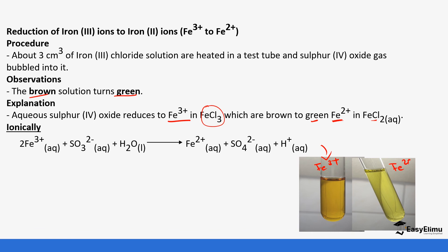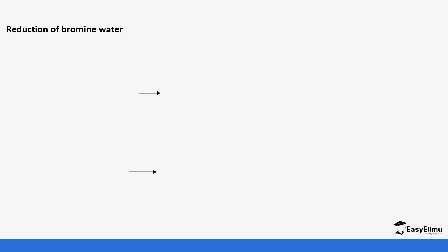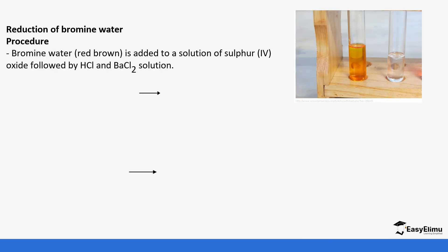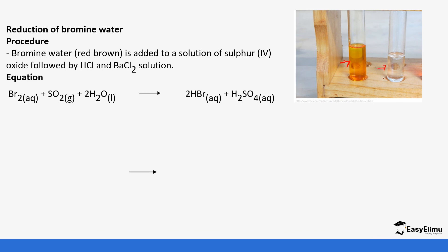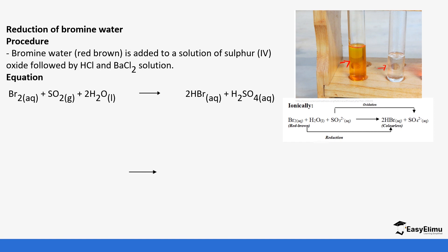Sulfur dioxide also causes the reduction of bromine water. Bromine water is yellow; when you bubble sulfur dioxide through it, it turns to a colorless solution. The color can sometimes appear red-brown depending on the concentration of the bromine solution. The bromine is reduced to hydrogen bromide — changing from red-brown to colorless — while the sulfite ions undergo oxidation to form sulfate ions.